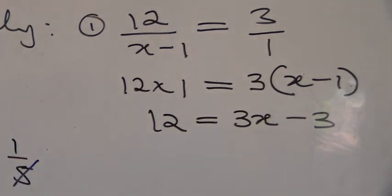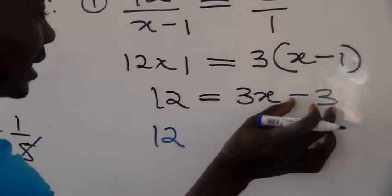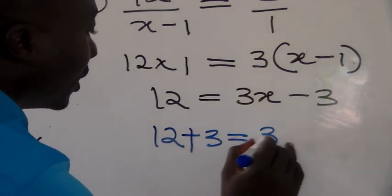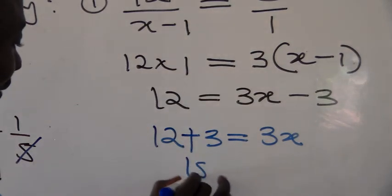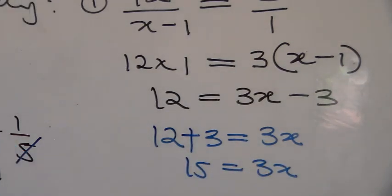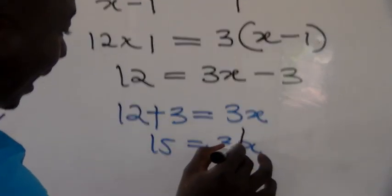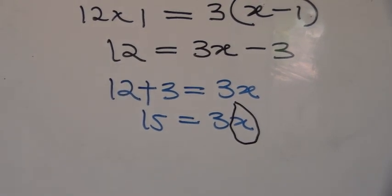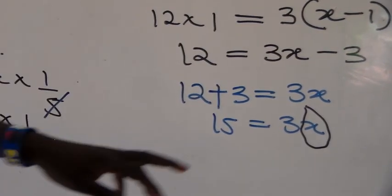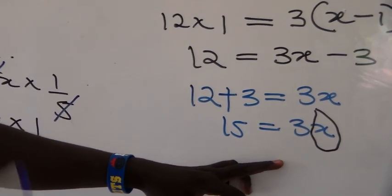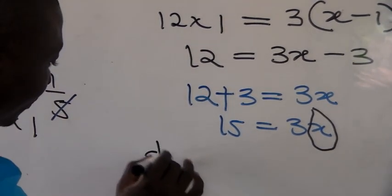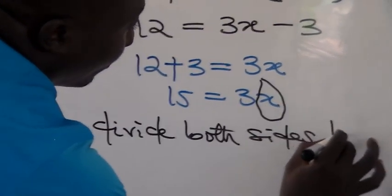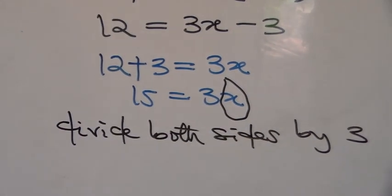We collect like terms: taking the negative 3 to the left-hand side it becomes positive 3, so we have 12 plus 3 equals 3x, giving us 15 equals 3x. What we are solving for is x, not 3x, so we divide both sides by the coefficient of x, which is 3. The coefficient of an unknown is the number attached to it.